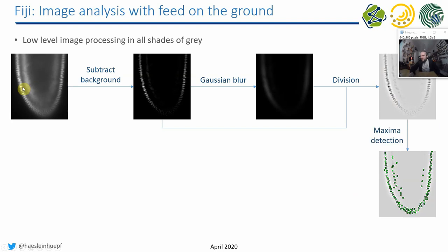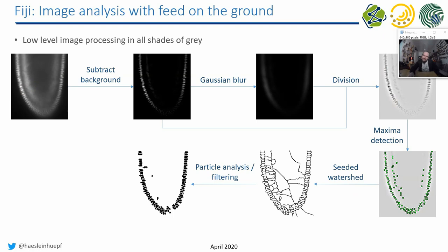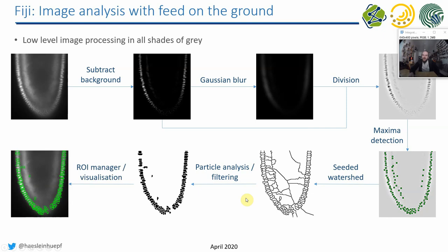You can then do maxima detection to find where objects are actually sitting, apply a so-called seeded watershed, do particle analysis and filtering, and then visualize the regions of interest found in the image on the original dataset. So these are very small processing steps which lead from a raw dataset to an annotated dataset where you can get proper measurements out.